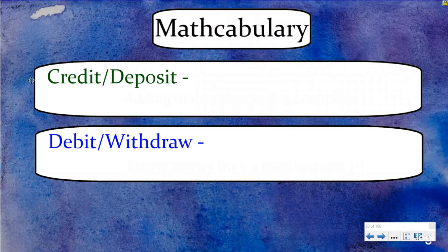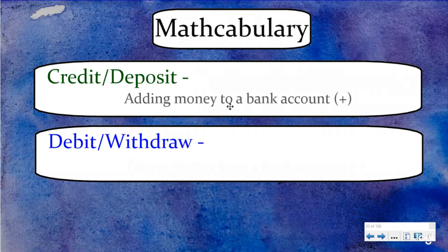So here, when we talk about money, we're going to be talking about bank accounts. This is one of the real life examples they love to use in negative number word problems. So here we have credit or deposit and that is when you are adding money to your bank account. You go and give a credit to your bank account or you go and deposit money into your bank account.